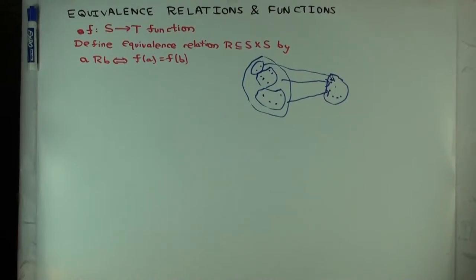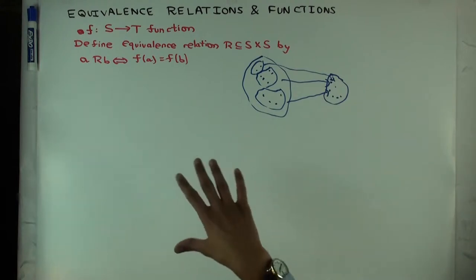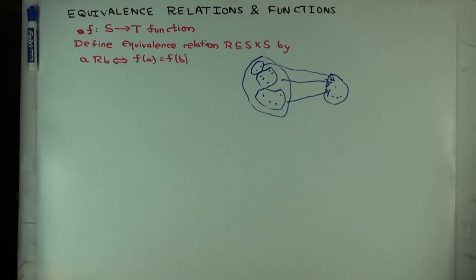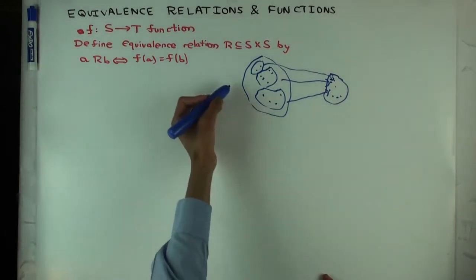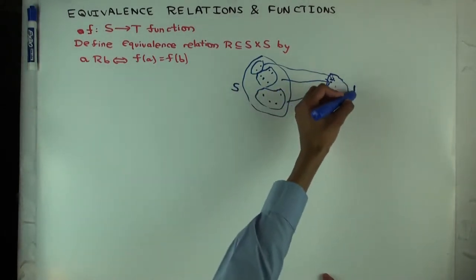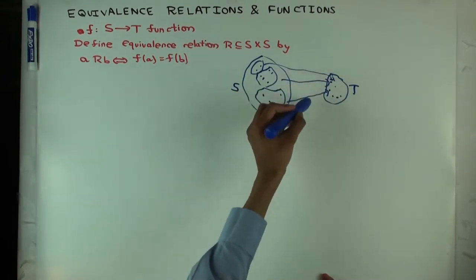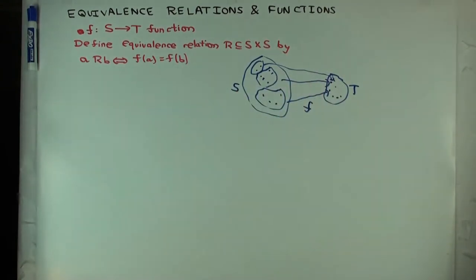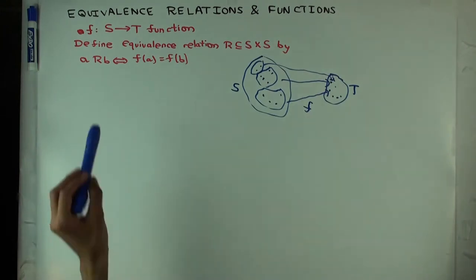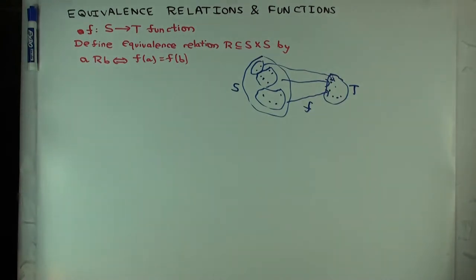In this talk I'm going to consider many examples of equivalence relations, all motivated by a particular way of thinking about them. You have a set S and a set T, and there's a function f from S to T. I define the equivalence relation on S as follows: two elements are equivalent if and only if the values of f at the two points are the same.